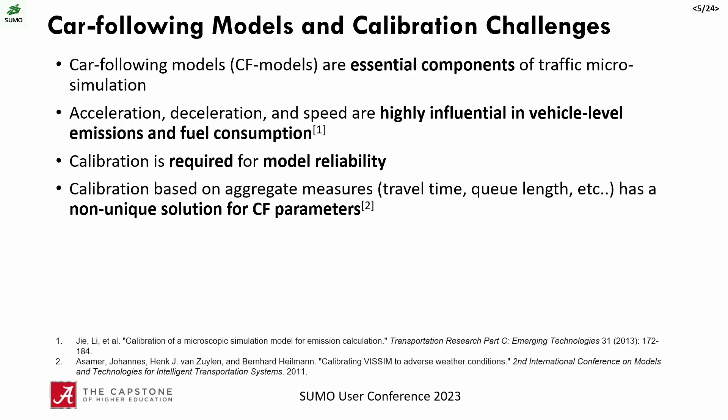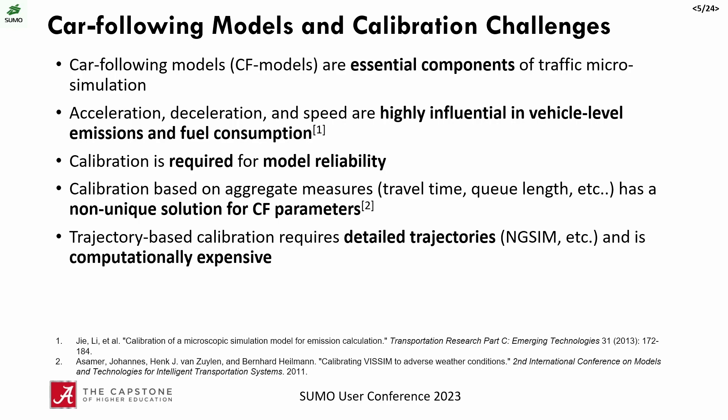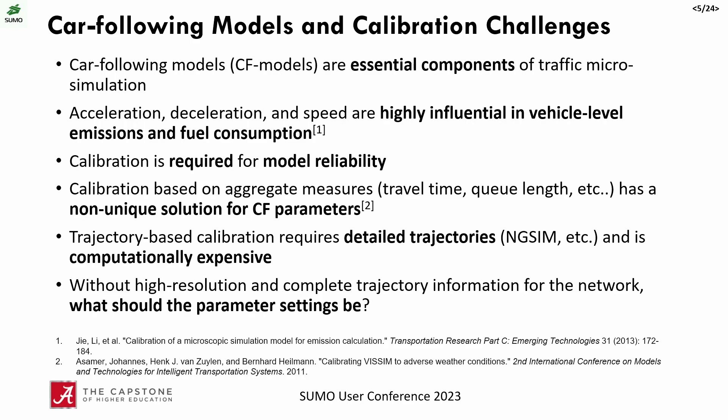Different sets of acceleration, deceleration, and headway can lead to the same queue lengths, volumes, or travel times. The answer is trajectory-based calibration. However, this requires detailed sub-second trajectories and is also computationally intensive — it typically uses genetic algorithms and must be run over multiple leader-follower pairs to get a distribution of realistic parameters. So for modelers that don't have high-resolution trajectory information or don't want to go through the trajectory-based calibration process, what should the parameter settings be?